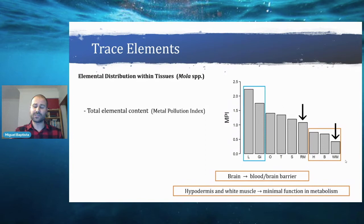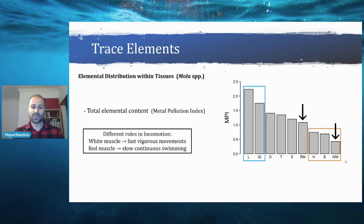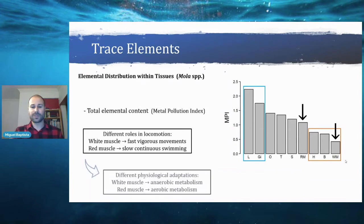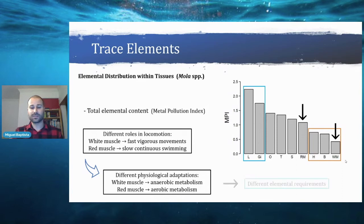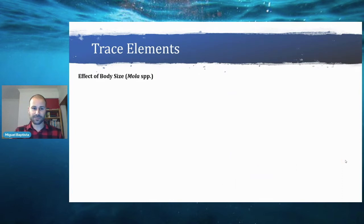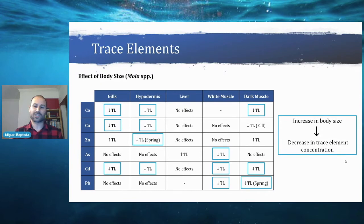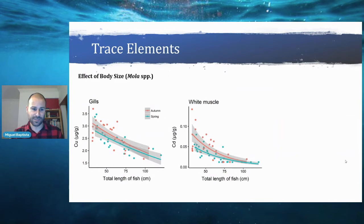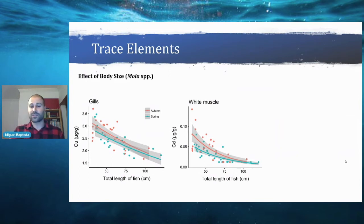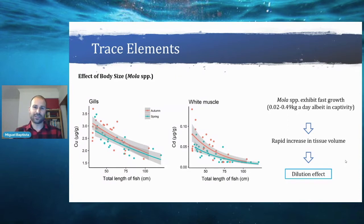Interestingly, we found a difference between red muscle and white muscle. These have different roles in locomotion — one for fast movements, the other for slow swimming — with different physiological adaptations. White muscle relies on anaerobic metabolism, red muscle on aerobic metabolism, so they should have different elemental requirements. In terms of body size, the most common result was a decrease in trace element concentration with an increase in body size. Molas grow extremely fast, so rapid increases in tissue volume cause a dilution effect, producing an overall decrease in concentration.